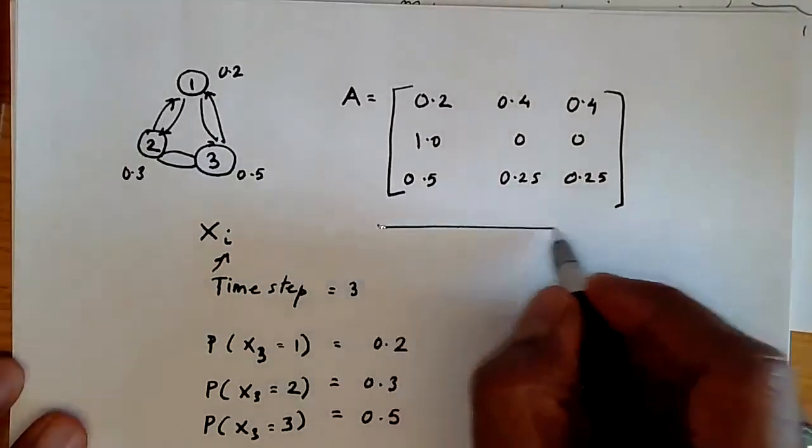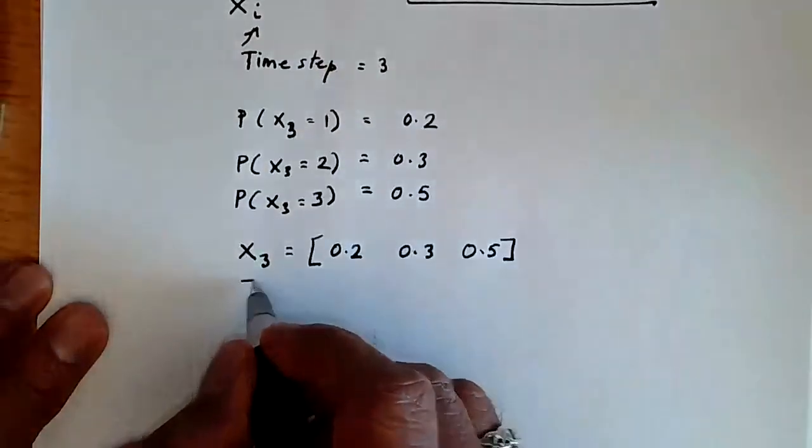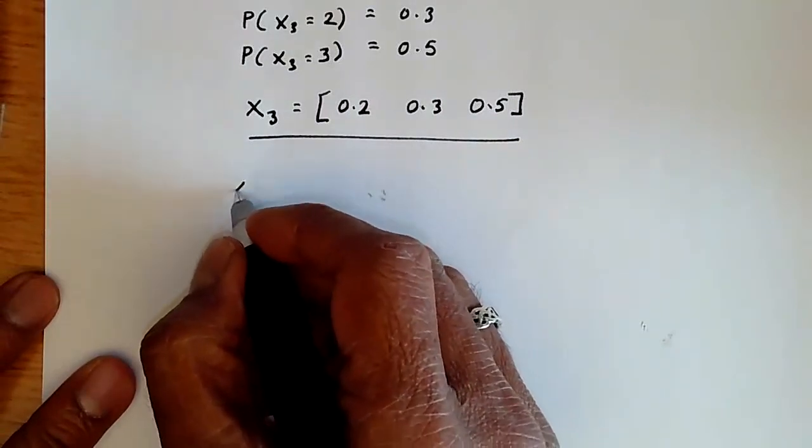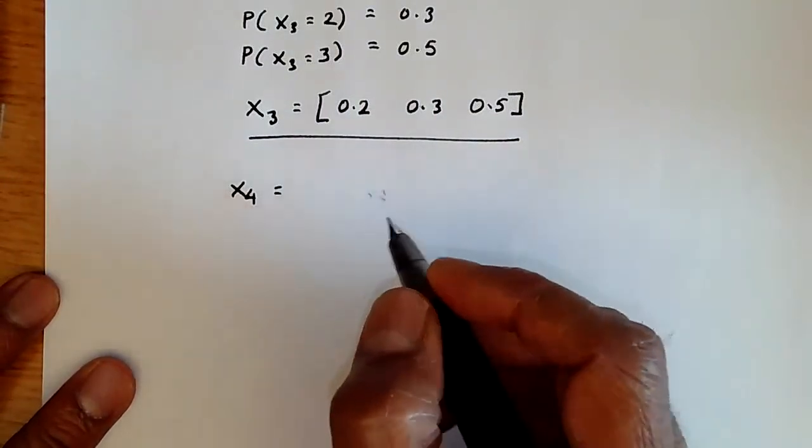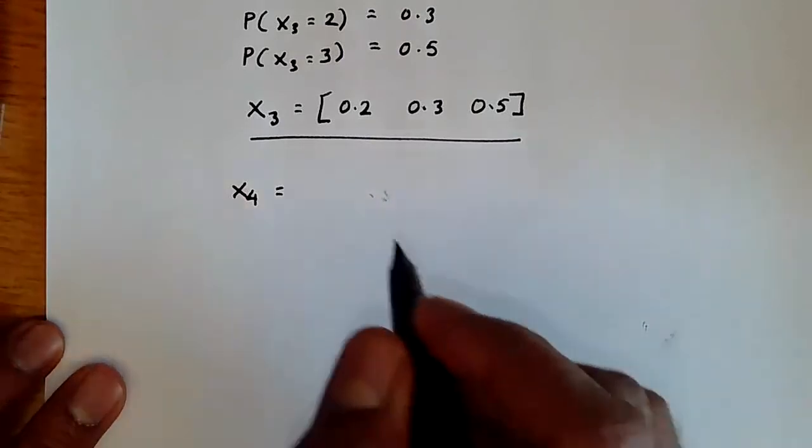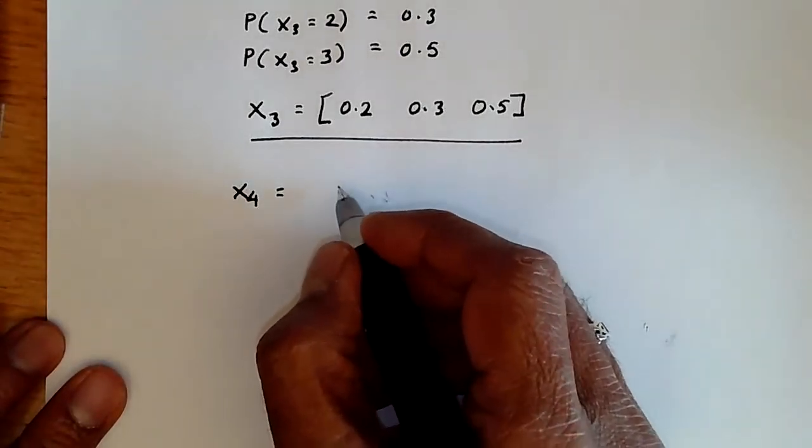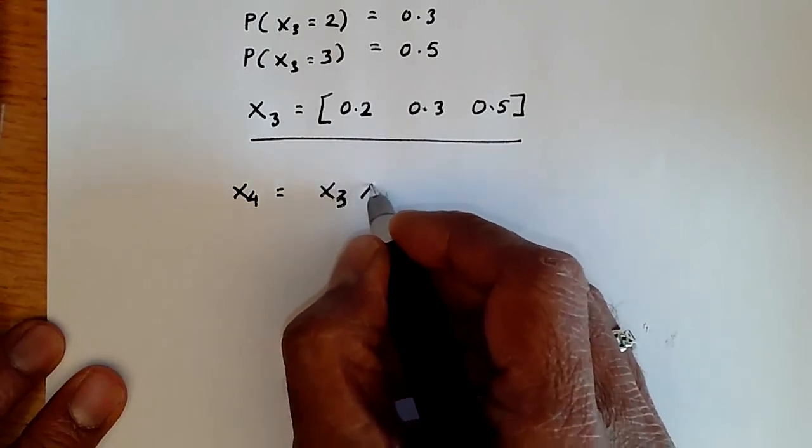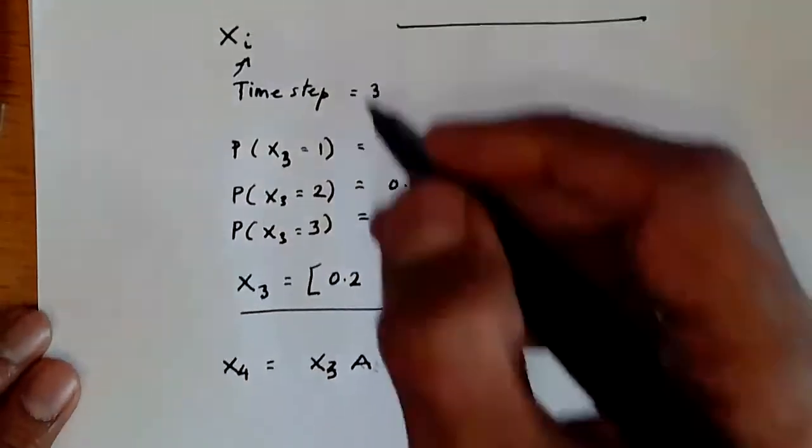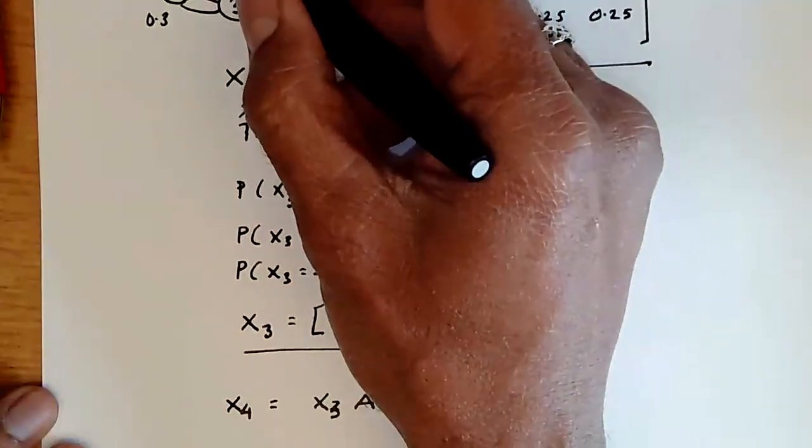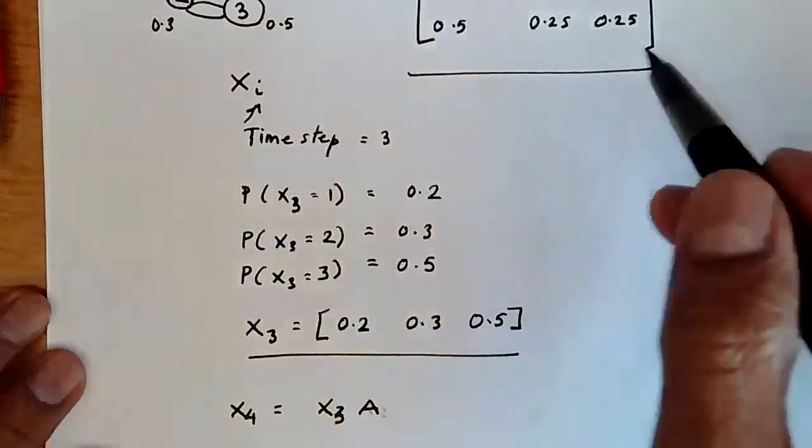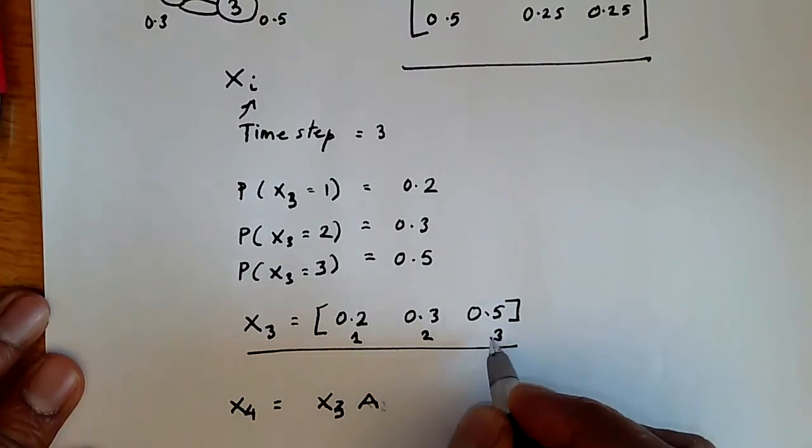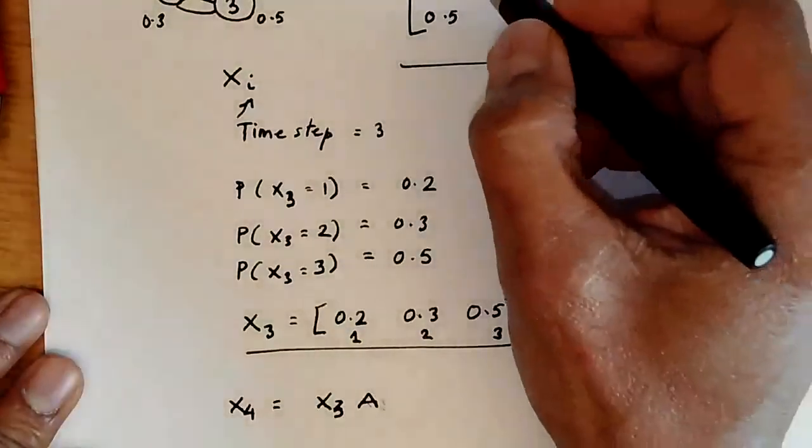Now, given the matrix A and the representation like this, we have a particularly nice way of representing things. We can say that X4, the probability of being in different states at time step 4, depends on X3 like this: it is basically X3 multiplying A. And why is that? Because the probability of being in state 1, for example, at time step 4, is the probability of being in state 1 at time step 3 and staying in state 1, which is 0.2,